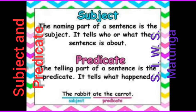For example, the rabbit ate the carrot. Here, the rabbit is the subject. Ate the carrot is the predicate. Who ate the carrot? The rabbit. So, rabbit is the subject and ate the carrot is the predicate.